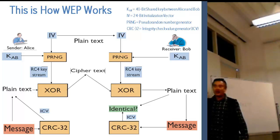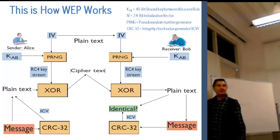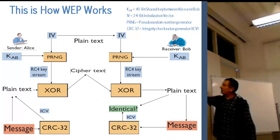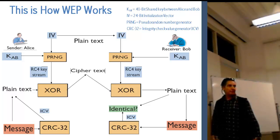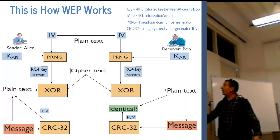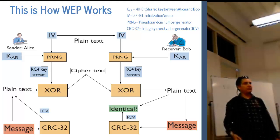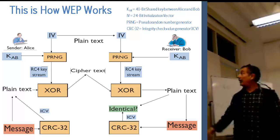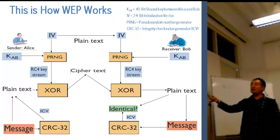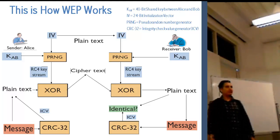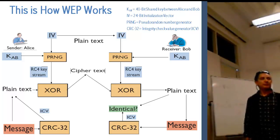The plaintext is message plus ICV. When I encrypt that, I'm actually encrypting both the message and ICV together, so the ciphertext contains the encrypted version of both. The IV, however, is not encrypted at all - it is sent in plaintext form on top of the ciphertext to Bob.